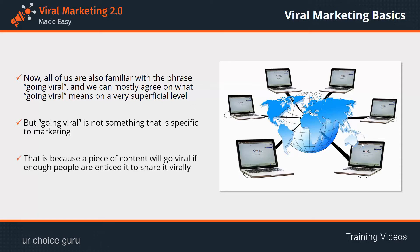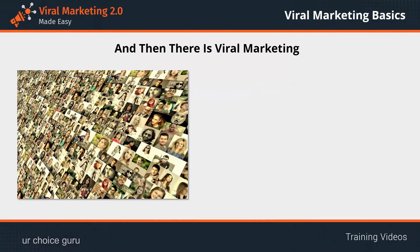That is because a piece of content will go viral if enough people are enticed to share it virally. Examples of things going viral are ample — memes, videos, songs, and even pictures go viral out of sheer coincidence just because they hit an emotional button that makes people want to share them with everybody they know. And then there is viral marketing.